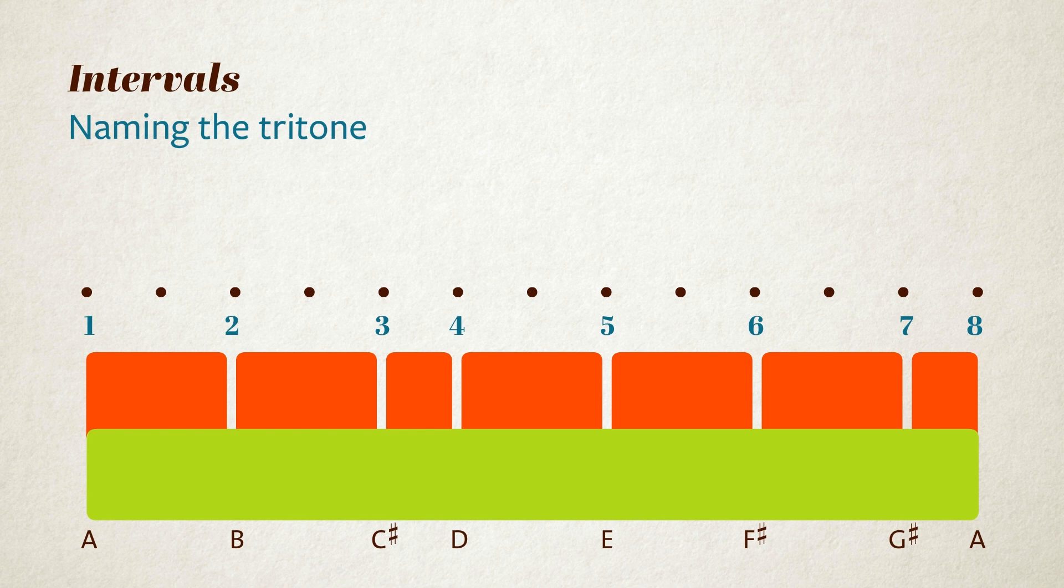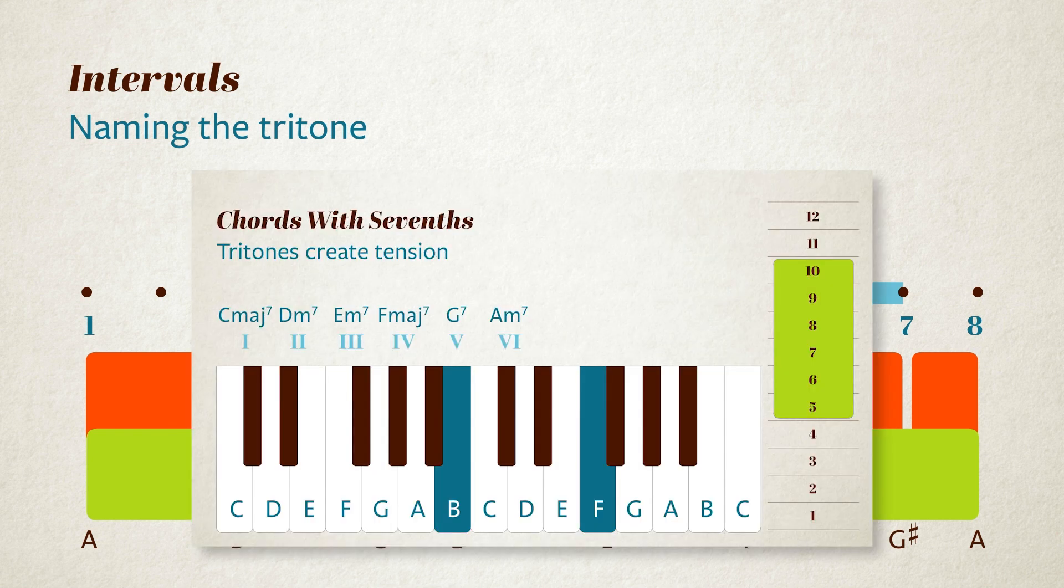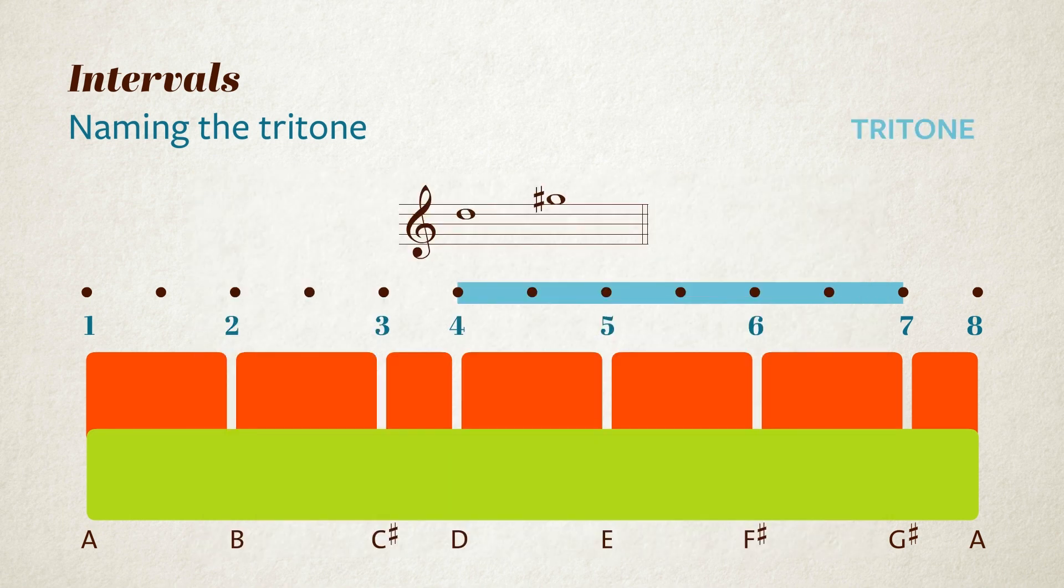Now one more interval that's worth a look is the interval between D and G sharp. This interval, at six semitones, is exactly half an octave. In my video on chords with sevenths, we saw how important this interval is in creating dominant seventh chords. We called it a tritone, which is a common way of referring to this interval, and the name tritone refers to the fact that this interval spans three tones.